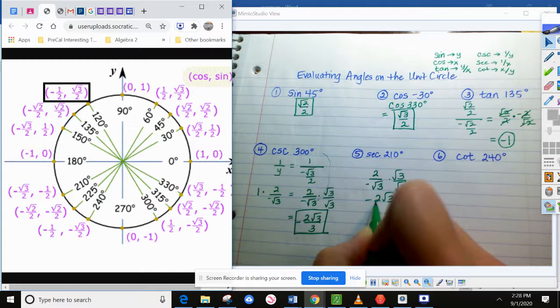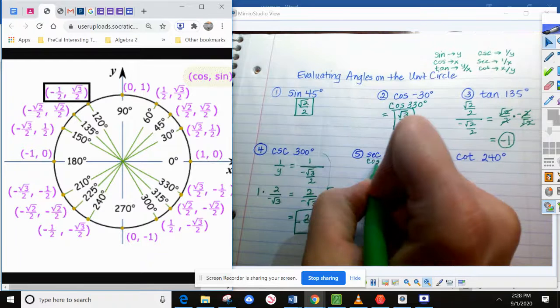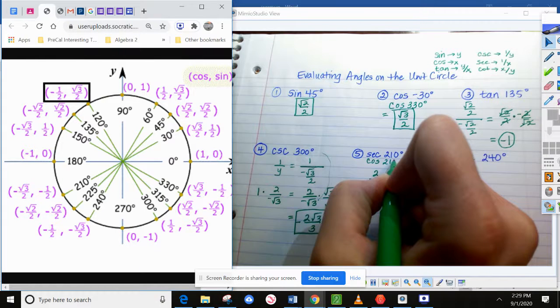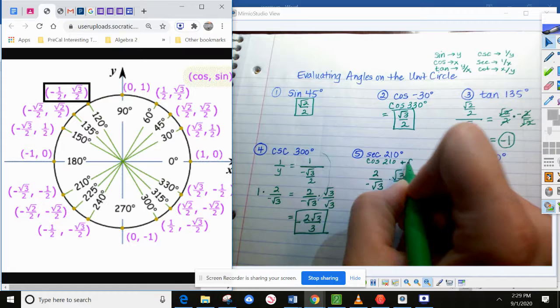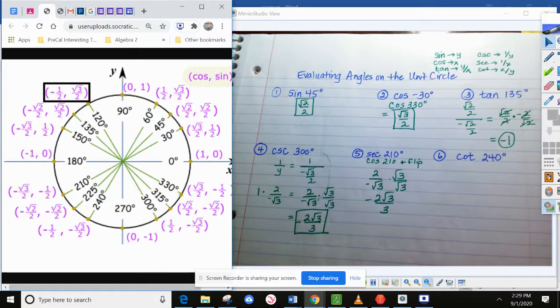All right. So what I did here, just to remind you, I looked at the cosine of 210 and then flipped it. That's how I got that one. I think that's easier than one divided by the coordinate, just personally.